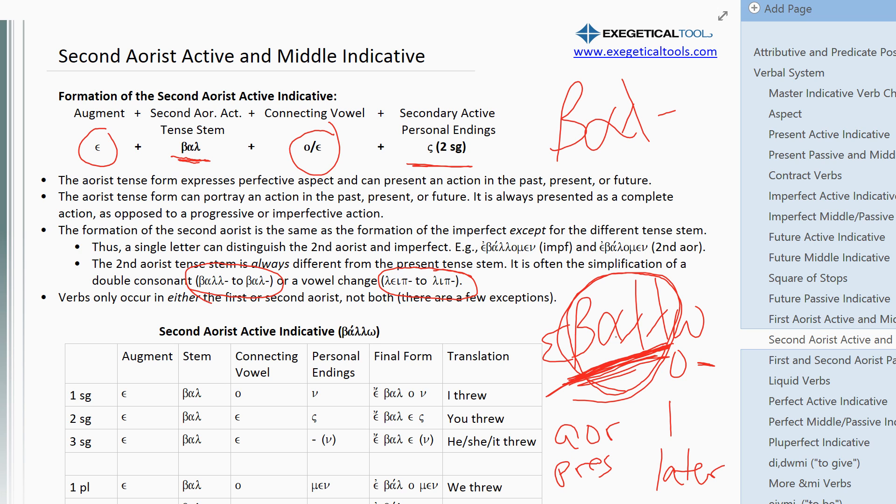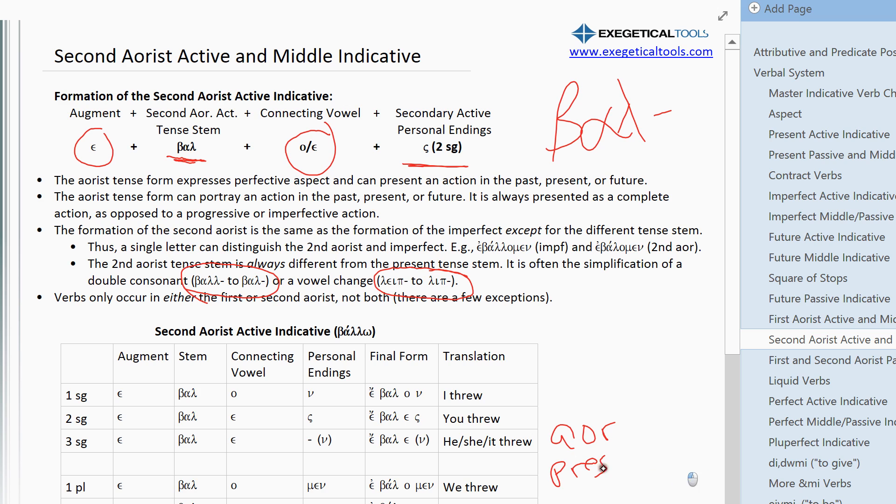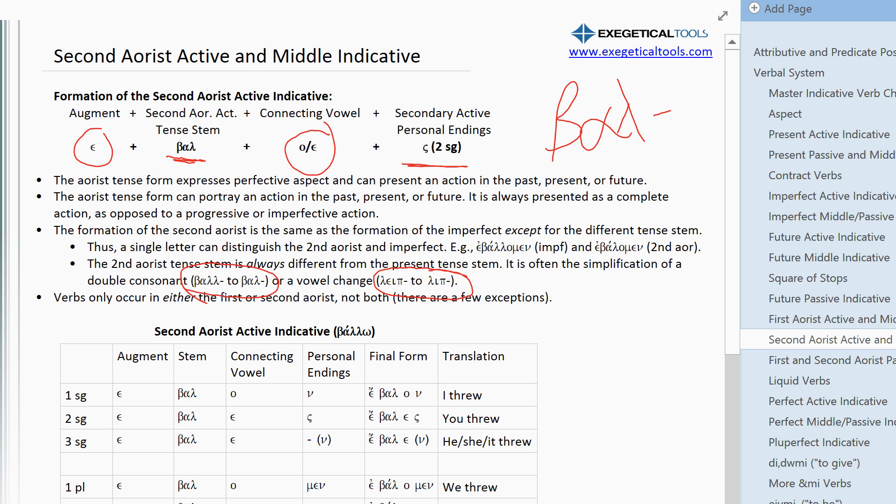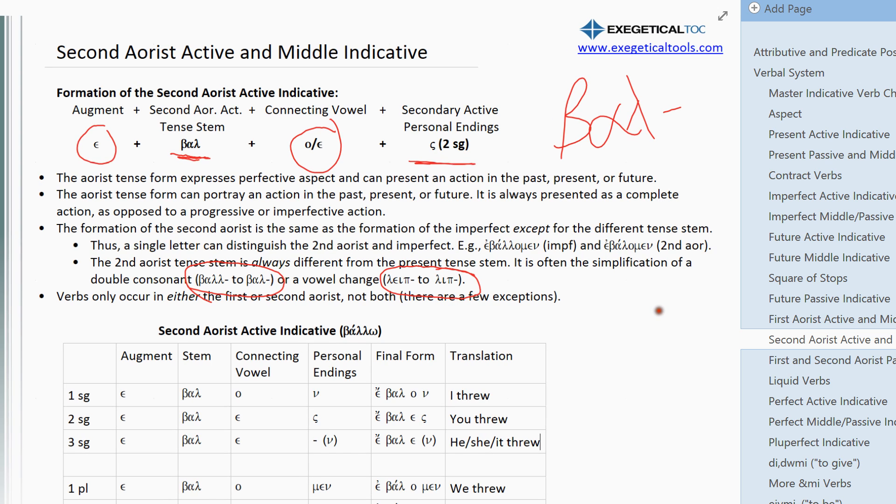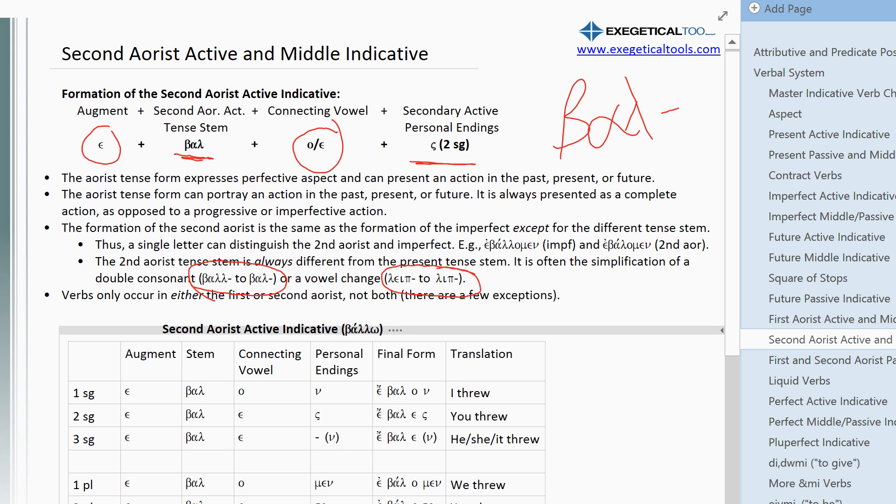And so, in that sense, the aorist is not really a stem change from the present, as if the present were there first and then the aorist came about. But it's that the aorist was there and then it's really a stem change to the present. But we memorize the present tense stem as the lexical form because that's just the way we do it in Greek. So, just remember that it's going to have a different stem.